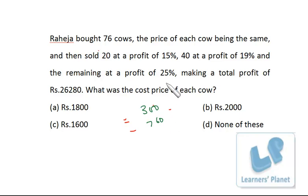And remaining, that is 40 plus 20 is 60, so 16 cows, on each cow is making 25 rupees, so 16 into 25, 400 rupees.